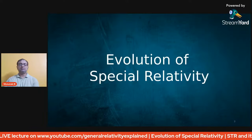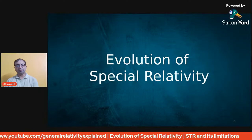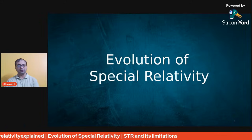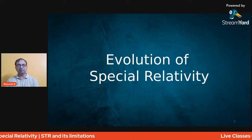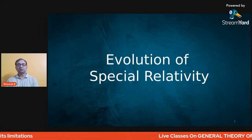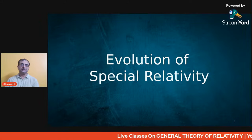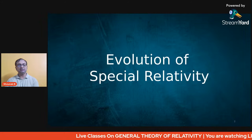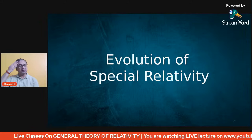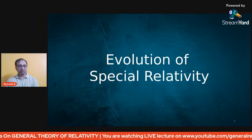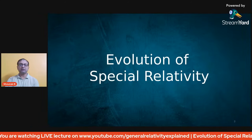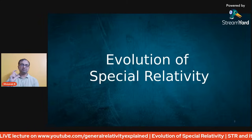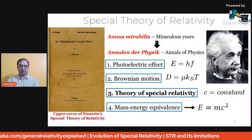In today's lecture, I would like to show you that general theory of relativity comes from a modification or extension of special theory of relativity, which is its predecessor. So we really need to know the reason behind the evolution of special relativity — without special relativity, general theory of relativity would not have been possible. We will look into those aspects and try to find out how we arrive at general theory of relativity.